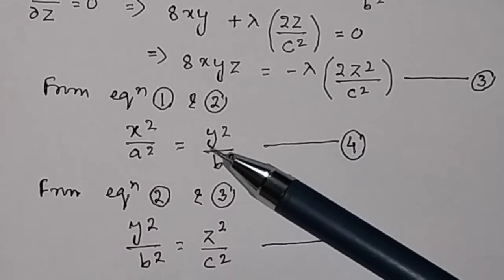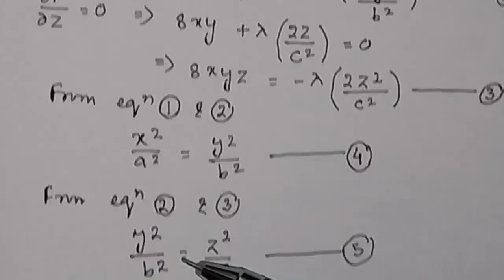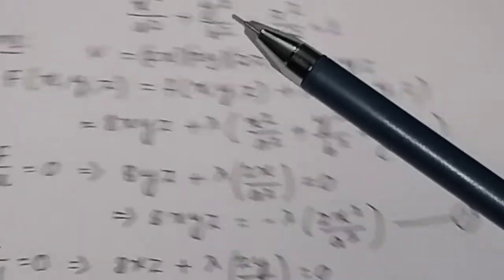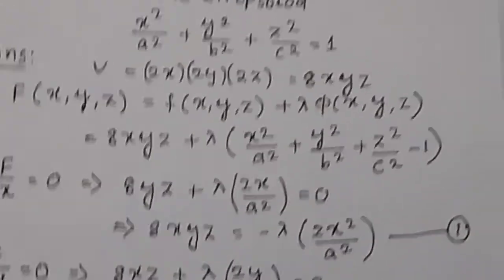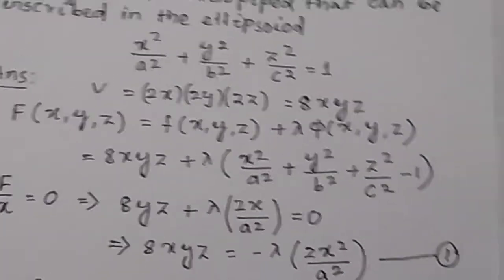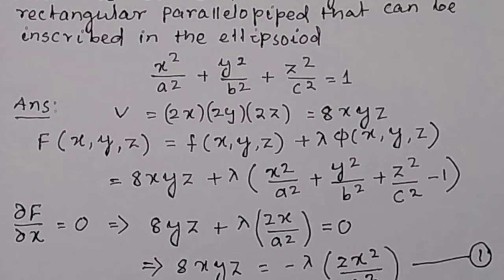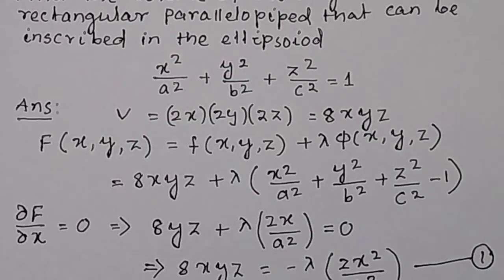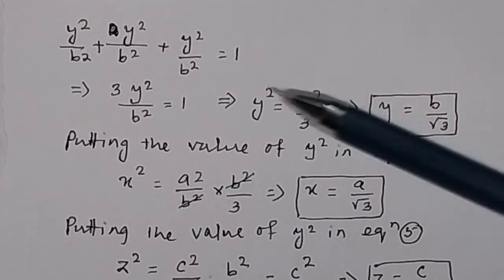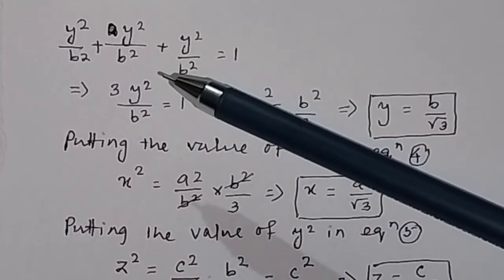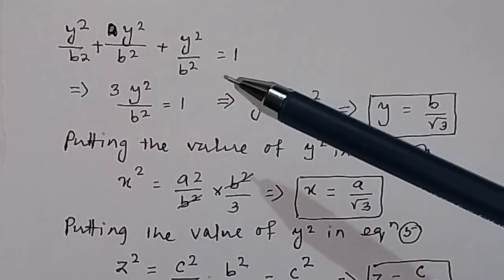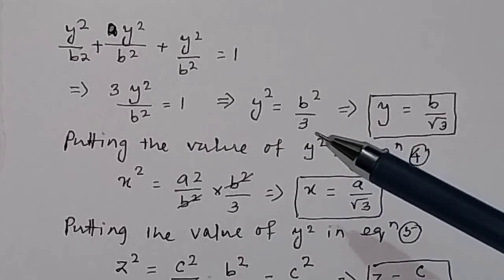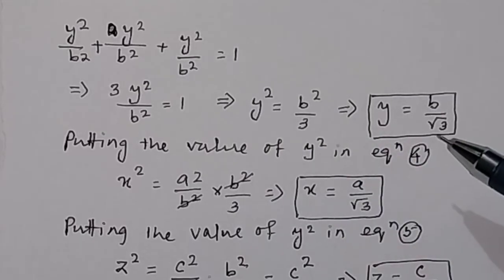Now substituting the values using x²/a² = y²/b² and z²/c² = y²/b² into the ellipsoid equation x²/a² + y²/b² + z²/c² = 1, we get y²/b² + y²/b² + y²/b² = 1, so 3y²/b² = 1, giving y² = b²/3, and therefore y = b/√3.